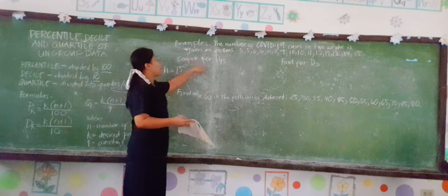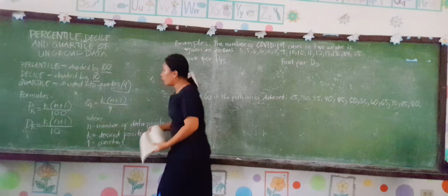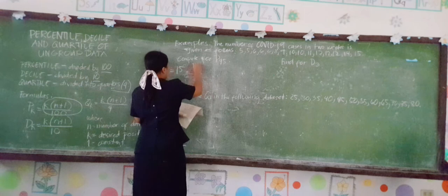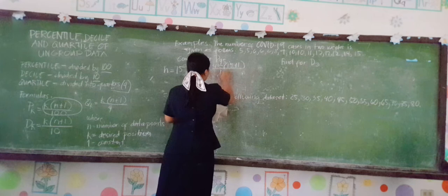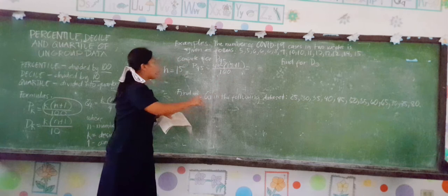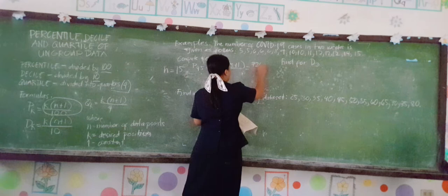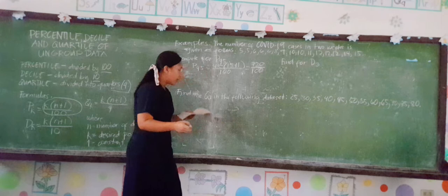We are going to compute for P sub 45. We follow the formula: P45 equals 45 times (15 plus 1) over 100. So 15 plus 1 is 16, multiplied by 45 gives 720, over 100. The answer is 7.2.